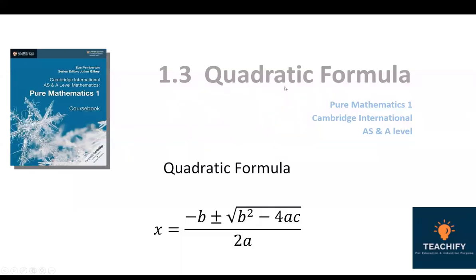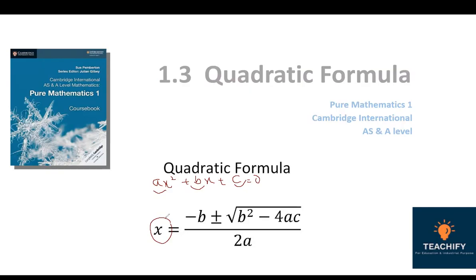The topic is 1.3 on the quadratic formula. We have to manipulate the quadratic formula in our equation to find the variable x. The general equation must be ax squared plus bx plus c equals to zero, where a, b, and c are coefficients. We have to find the value of x through this quadratic formula, which is a direct method to find the roots of a given equation.